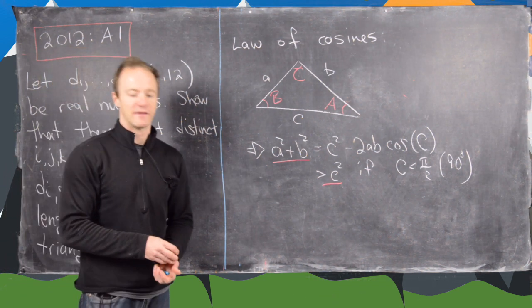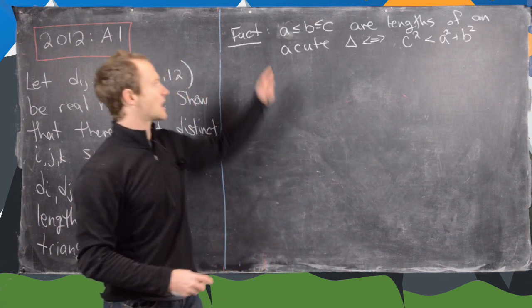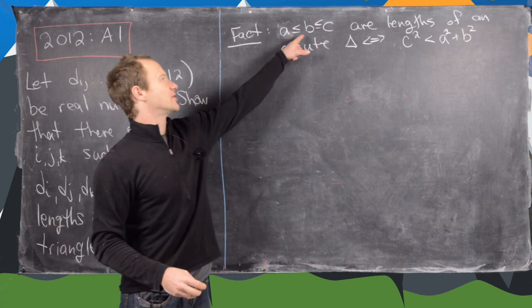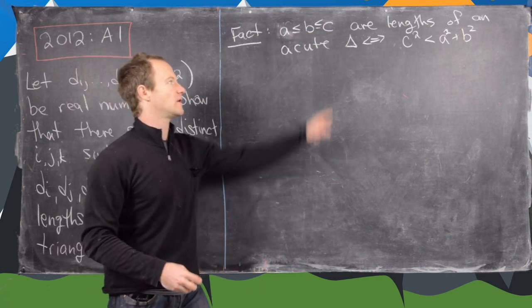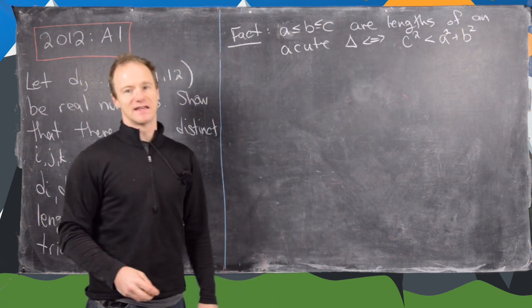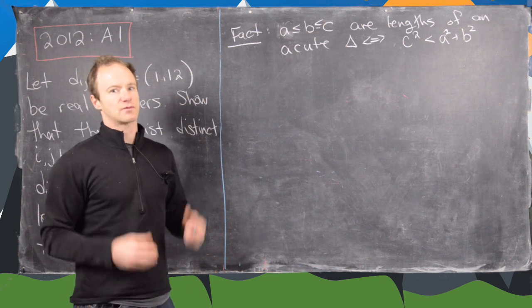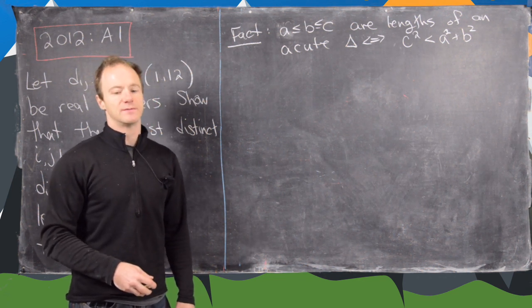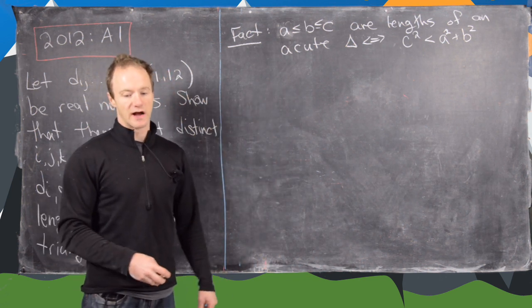We'll use that fact as we work through this problem. The key fact is: a ≤ b ≤ c are lengths of an acute triangle if and only if c squared is less than a squared plus b squared. If you get equality it's a right triangle by the Pythagorean theorem, and if c squared is greater you have an obtuse triangle. We are looking at acute triangles in this case.